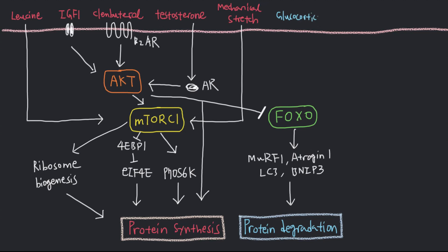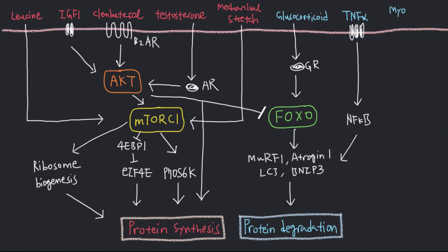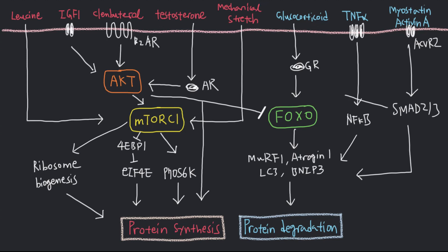Glucocorticoid receptor activation can also directly induce FOXO expression, and pro-inflammatory cytokines such as TNF-alpha can increase expression of these proteins through activation of NF-κB. In addition, myostatin and activin-A through activin-2 receptors phosphorylate SMAD2/3 proteins, which inhibit AKT activity and induce the expression of atrophy-related proteins. Animals and even humans deficient in myostatin are hyper-muscular, with individual muscle groups growing to about twice the regular size.